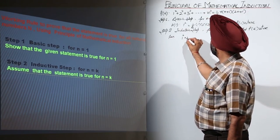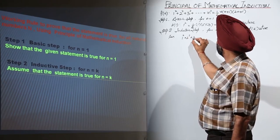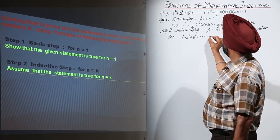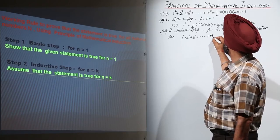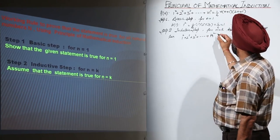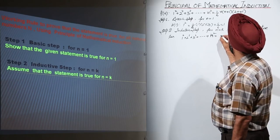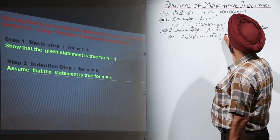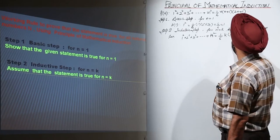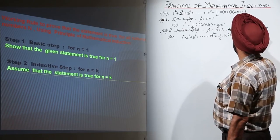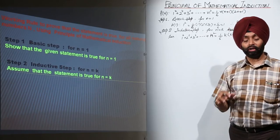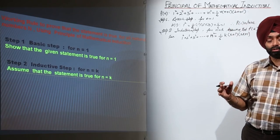In step 2, we write: 1 squared plus 2 squared plus 3 squared plus ... plus k squared equals k times (k+1) times (2k+1) upon 6. This is the form for step 2.